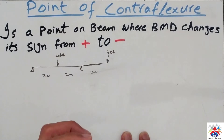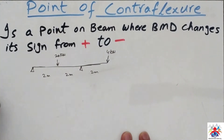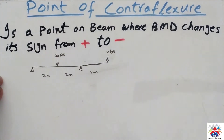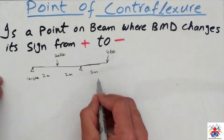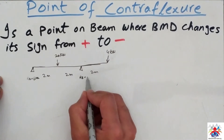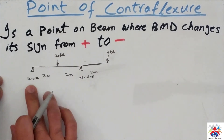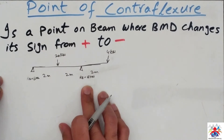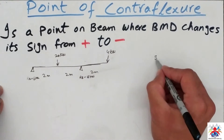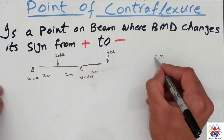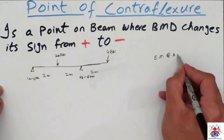Since we are focusing on where bending moment changes its sign from positive to negative, I am going to include only the bending moment diagram rather than the shear force diagram. Reaction at R_A is equal to 6 kilonewtons and reaction at R_B is equal to 18 kilonewtons, both values coming from the previous example.